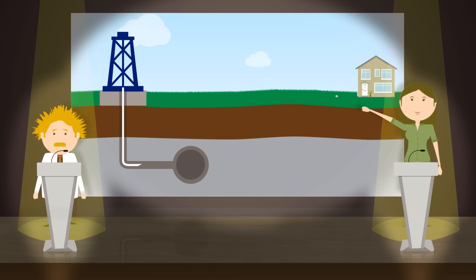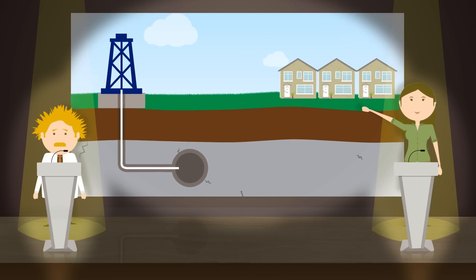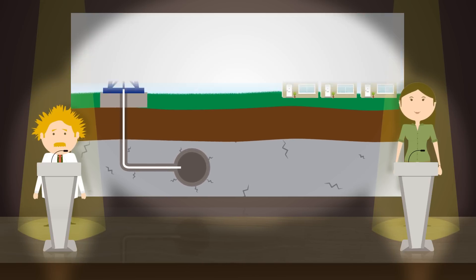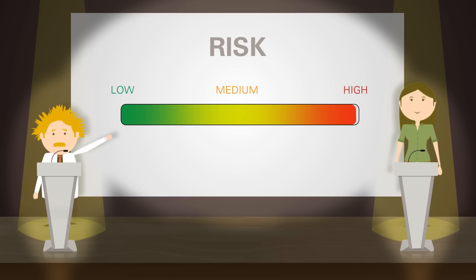But at what cost? There's proof fracking can increase the chances of earthquakes. Robust regulation means risks are now minimal. UK authorities review all applications before licensing and have a system in place for monitoring seismic activity.